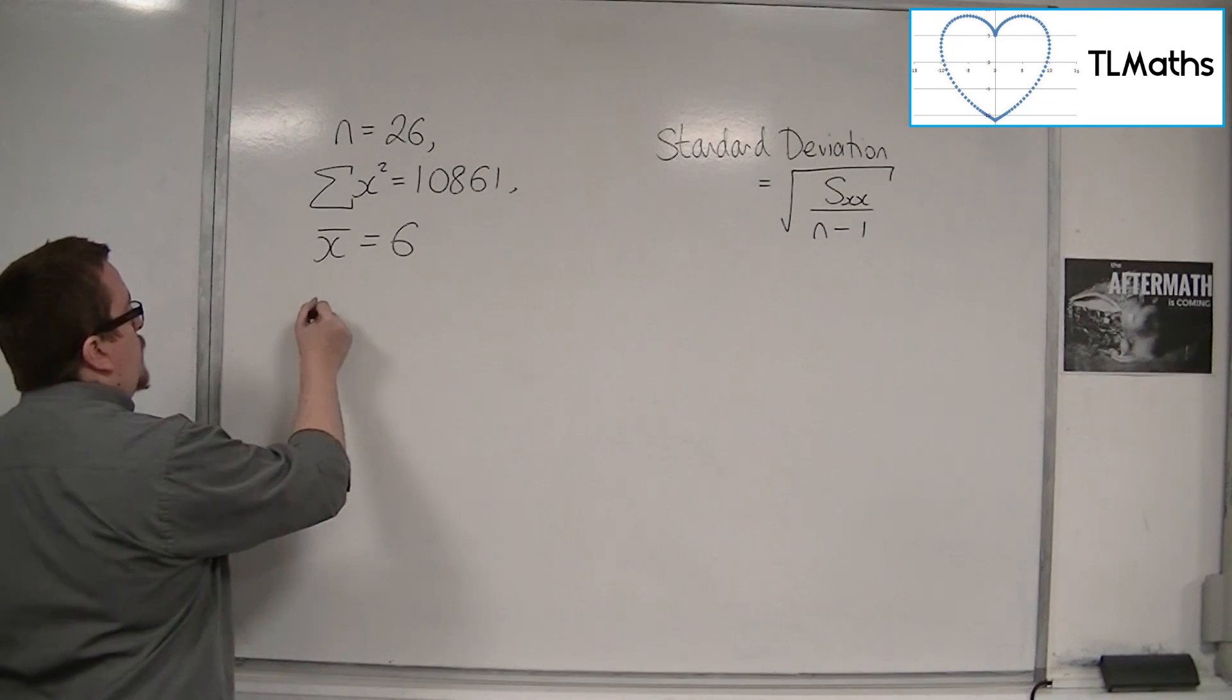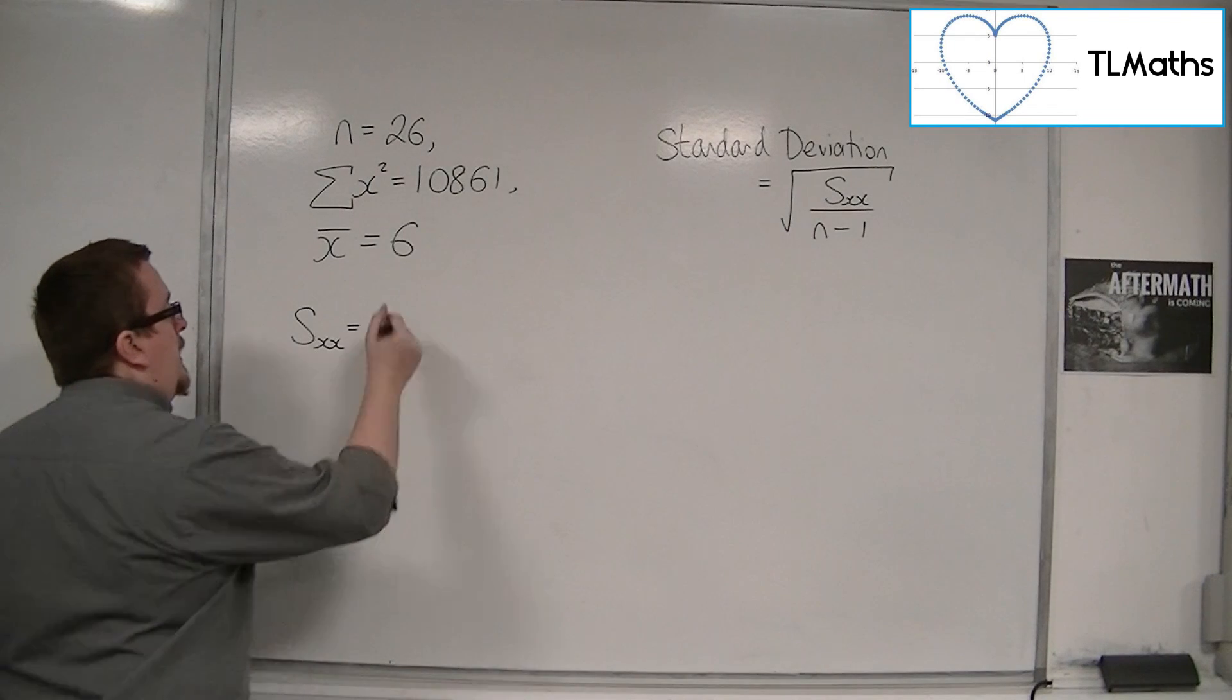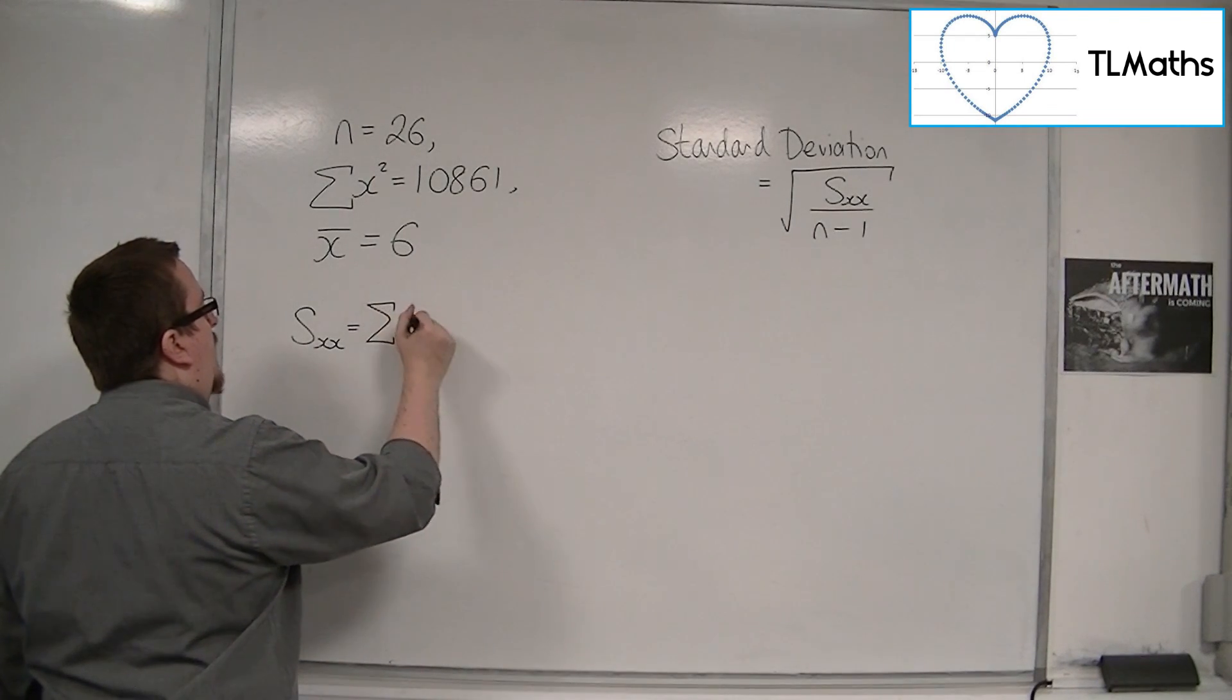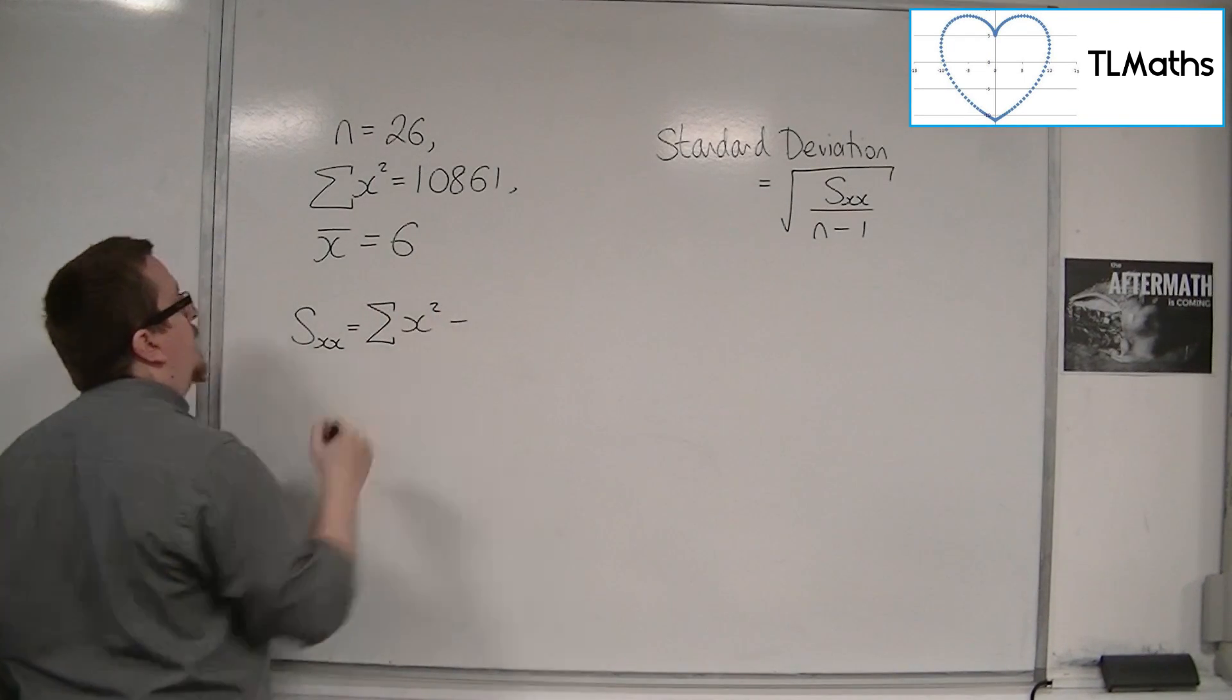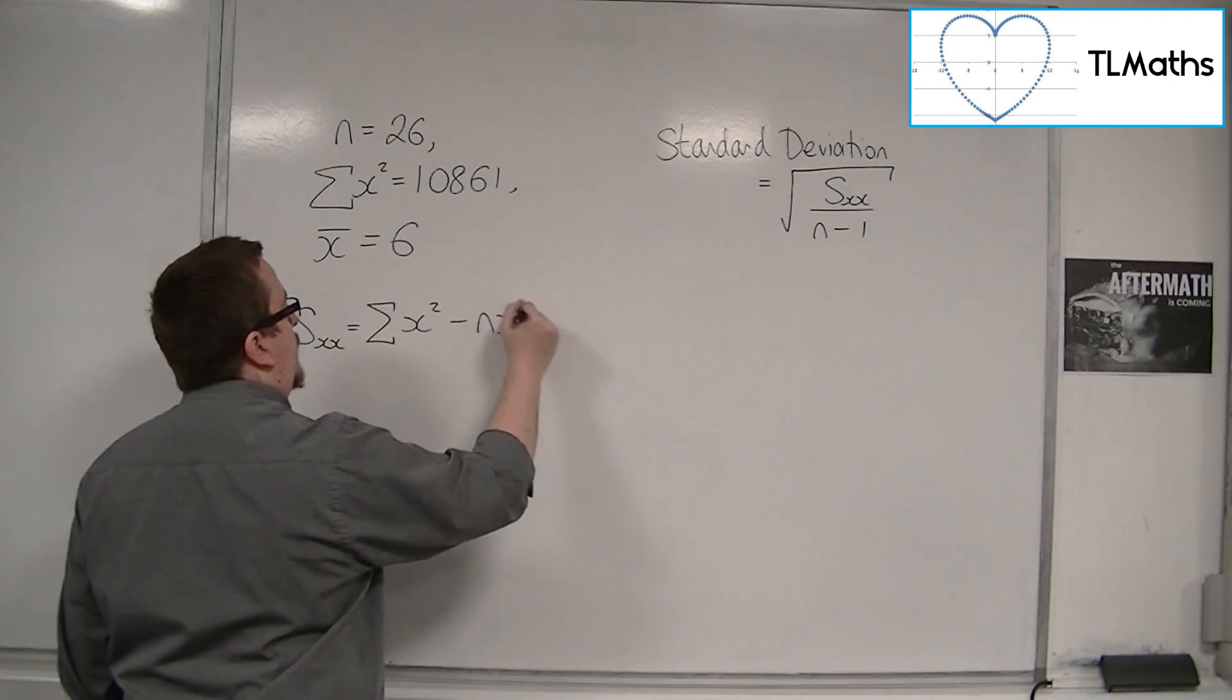We also need to figure out what sxx is. This is in the formula booklet, and the formula for it is the sum of the x squareds, take away n times x̄ squared.